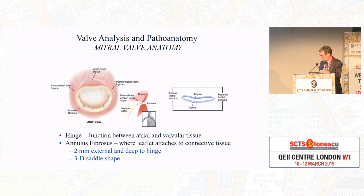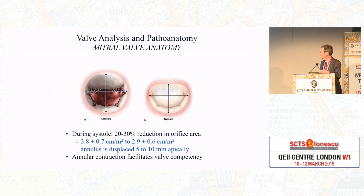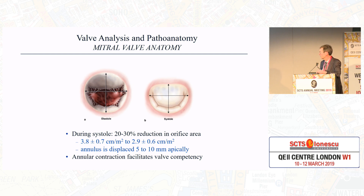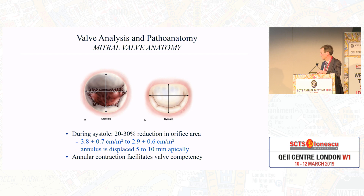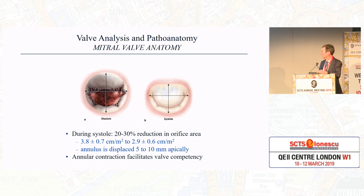That's the portion of the annulus that will dilate. During systole, there's a 20% to 30% reduction in the orifice area, and the annulus is also displaced apically. That measurement of how far apically can be an estimate of ejection fraction and the contractility strength of the ventricle. Annular contractility also facilitates valve competency to some degree.